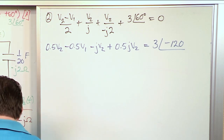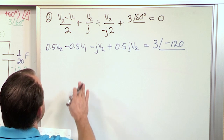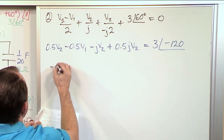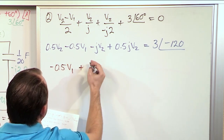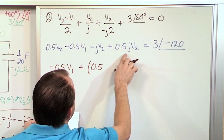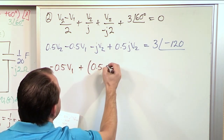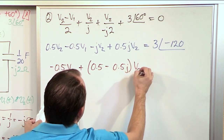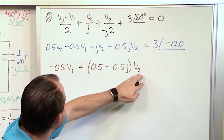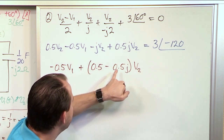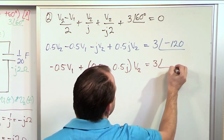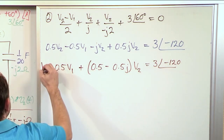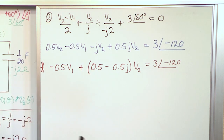Simplifying the second equation: the only V1 term is −0.5V1. Collecting V2 terms — the real part is 0.5 and the imaginary parts are −j and +0.5j, combining to −0.5j — so the V2 coefficient is (0.5 − 0.5j)V2. The second equation is: −0.5V1 + (0.5 − 0.5j)V2 = 3∠−120°.